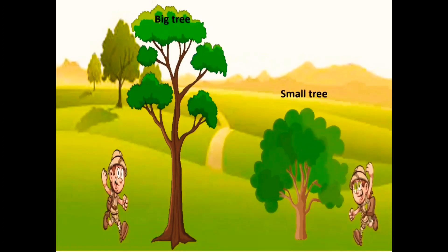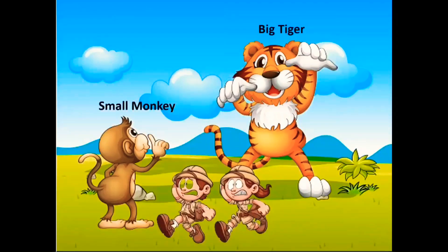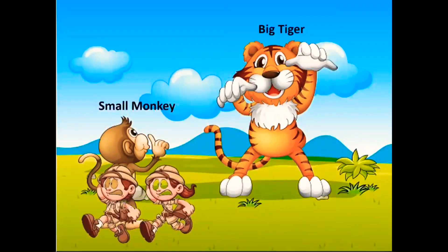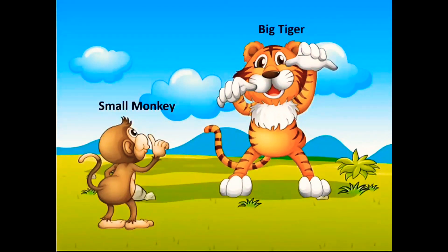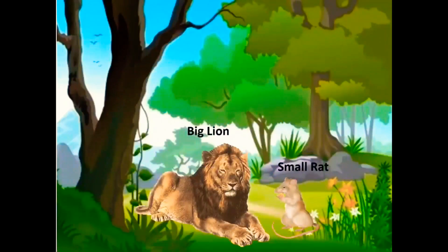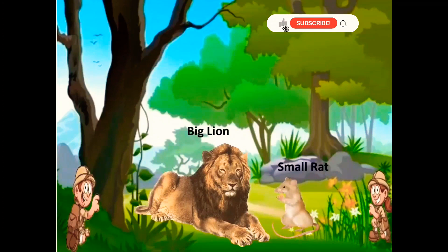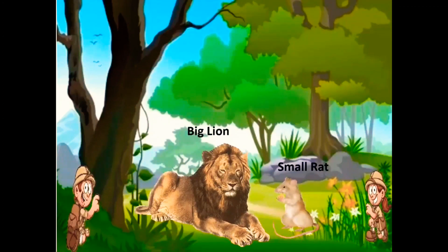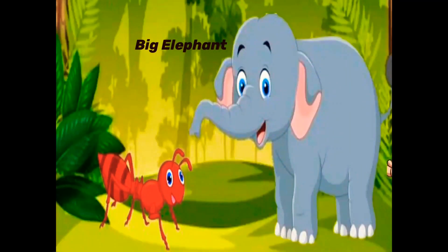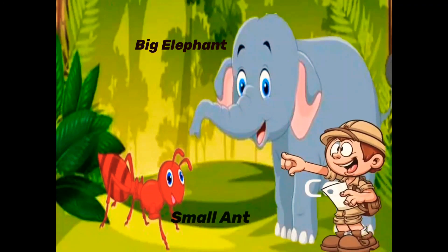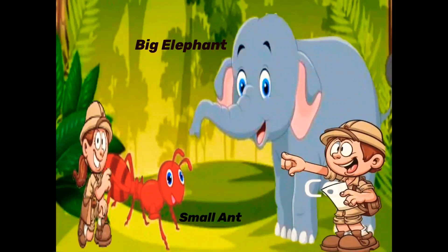Going forward, they see a big tiger is scaring a small monkey. They get scared and run away from that place. Then they see a big lion and a small rat are talking with each other. Then they see a big elephant and a small ant are playing happily.